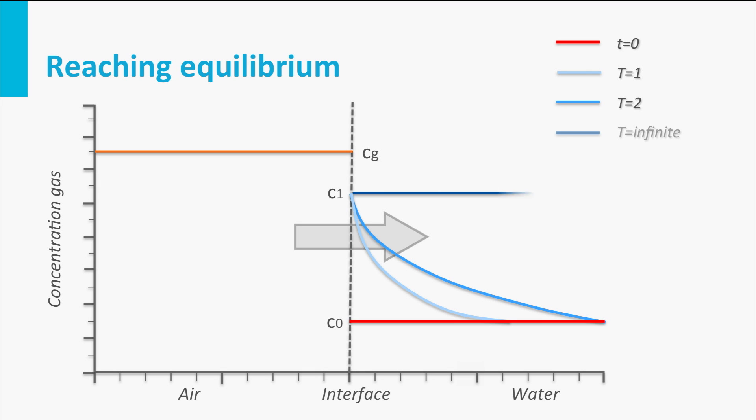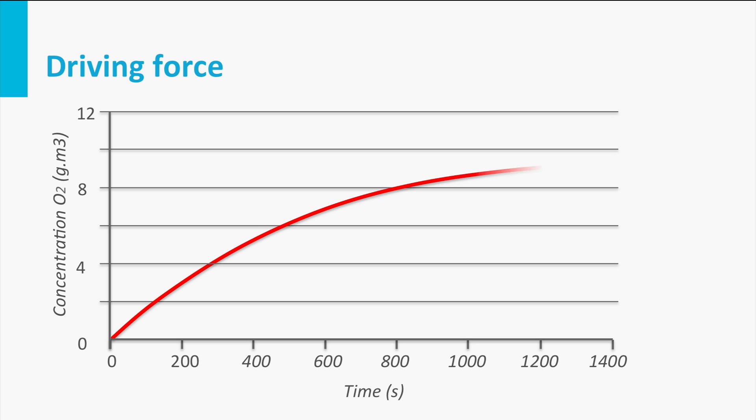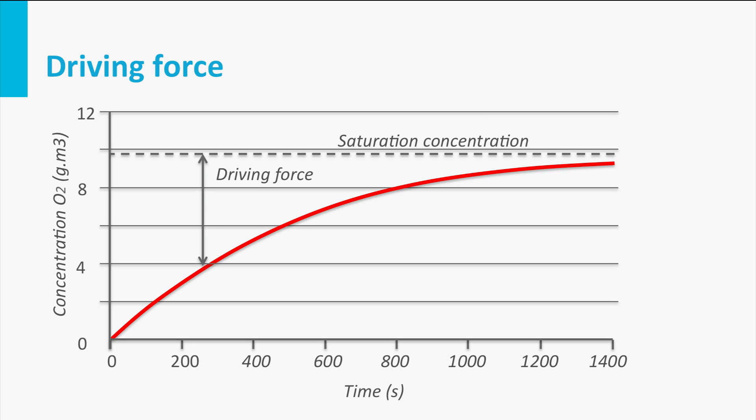Equilibrium is not achieved at once during intensive contact between water and air. Rather, the gas exchange takes place at a rate that is linear to the driving force. This driving force is the difference between the actual concentration and the equilibrium concentration. The gas transfer coefficient depends on the magnitude of the contact surface area between water and air and the rate at which this surface is replaced. The figure shows the profile for the oxygen concentration in an aeration device. Initially, the concentration increases rapidly, but this increase is slowed down due to the reduced driving force.